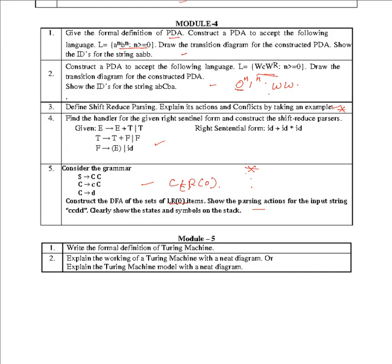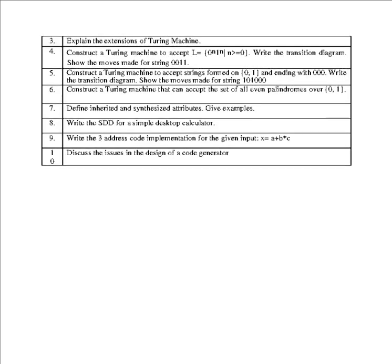Fifth module: Turing machines, very important. Write the formal definition of Turing machine and explain the working of a Turing machine, or explain the Turing machine model with a neat diagram. Theory questions will be for 5 marks. And explain the extensions of Turing machines. All these are theories and standard problems.